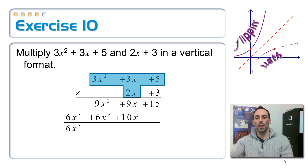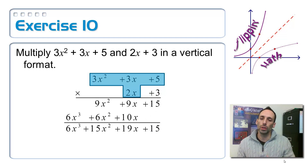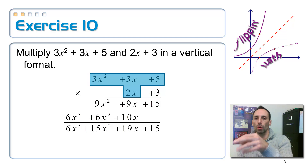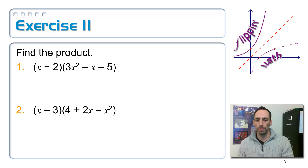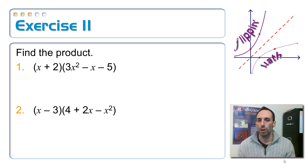The result is 6x cubed, 15x squared, 19x, and plus 15. I don't care whether you multiply in a vertical or horizontal format as long as you get it right. Go ahead and pause the video on exercise 11, give yourself some extra practice finding the products. Maybe try both ways — try a horizontal, try a vertical. Give it a try.